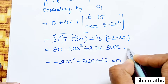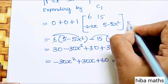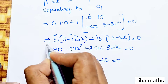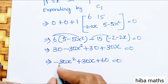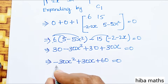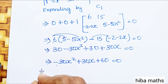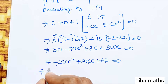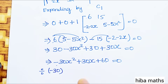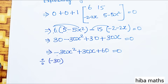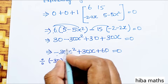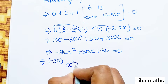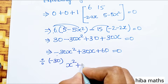So −30x² + 30x + 60 = 0. Dividing by −30 gives x² − x − 2 = 0.